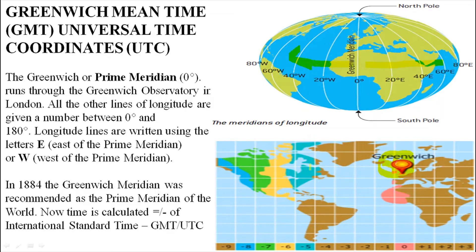We have 0 degrees at GMT, and on the west side there is minus 1, minus 2, minus 3, minus 4, while on the east we have plus 1, plus 2, plus 3, plus 4. This is the main reference point — the international standard chosen in 1884, when it was decided that the Greenwich meridian would be recommended as the prime meridian of the world. All time zones are based on this.